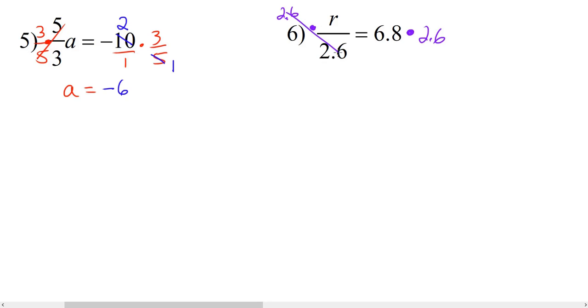On the left, these cancel out, leaving us with r. And on the right, 6.8 times 2.6 is 17.68.